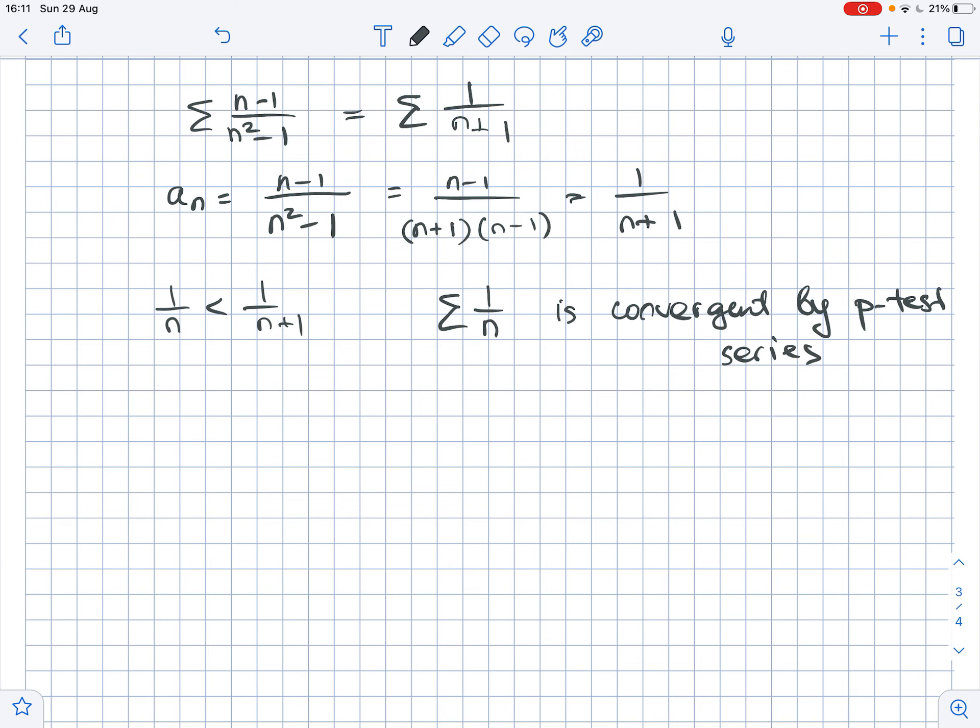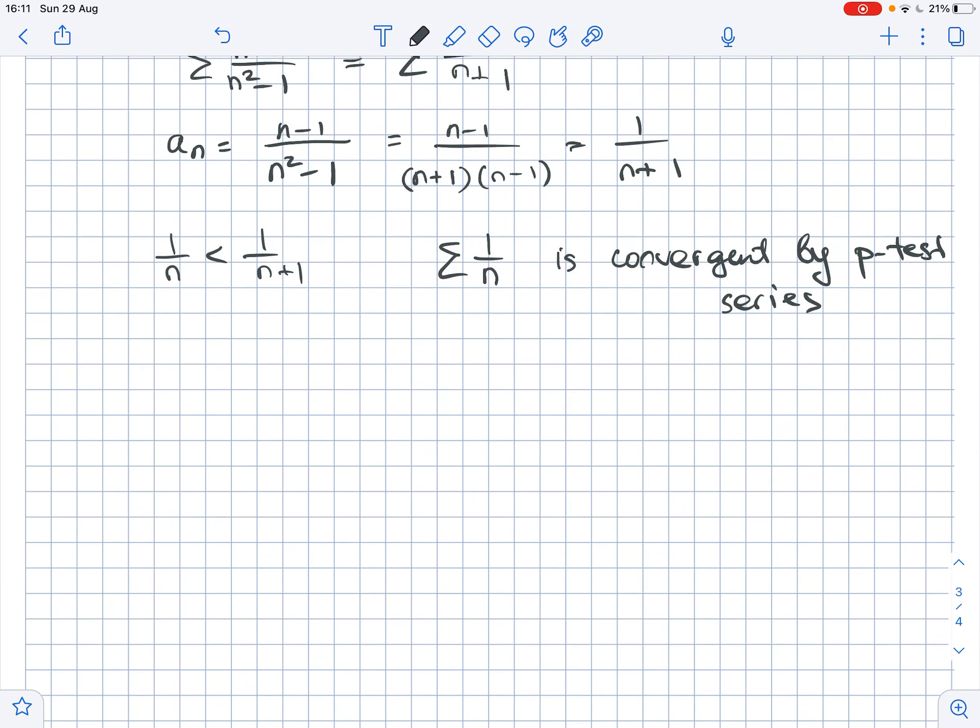So that means that by comparison test, the given series n minus 1 over n squared minus 1 is convergent. And it diverges to infinity since the series 1 over n also diverges to infinity.